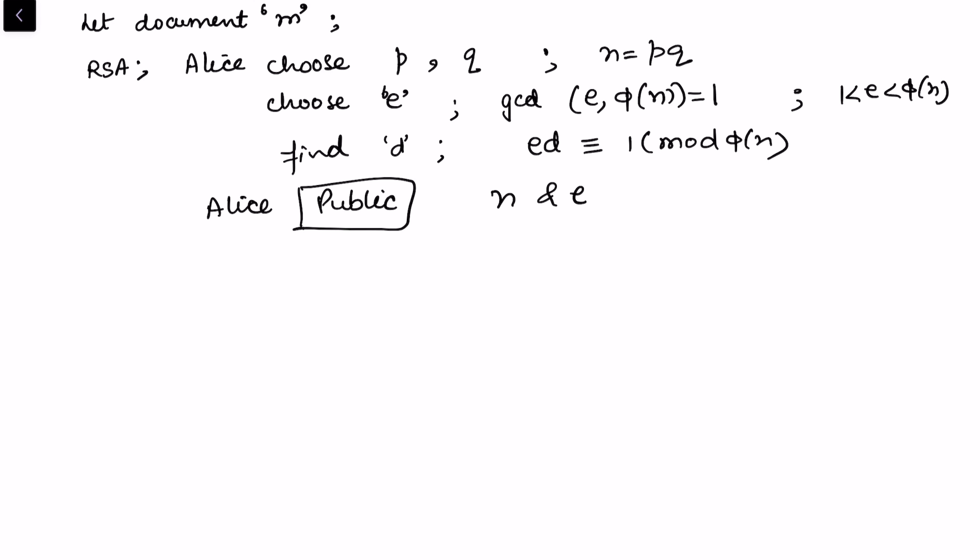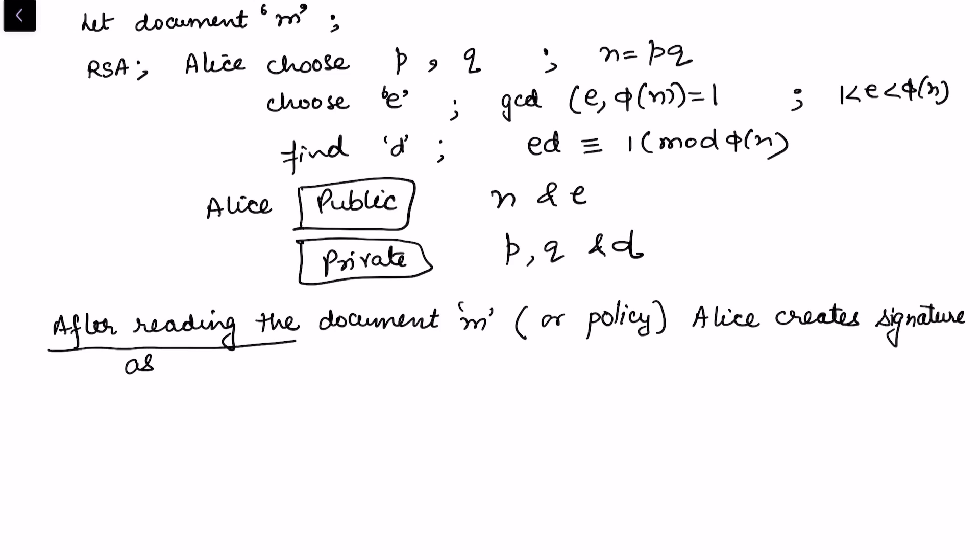Now Alice has certain information which is public, so she publishes n and e. This is the public information. And she has this information as private which is p, q, and d. After reading the document m, or in our case the insurance policy, Alice creates signature as s which is congruent to m to the power d mod n. Because Alice already has access to the document m which she wants to sign, and she already has this private information d. So she creates s.